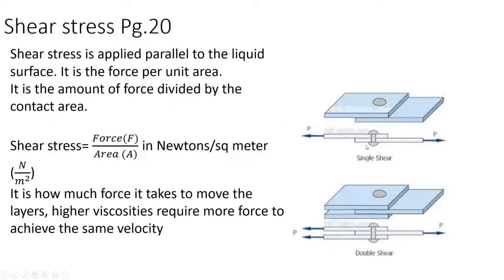Shear stress is the force applied parallel to a liquid — force per unit area (Newtons per square metre) — and is a measure of how much force it takes to move the layers. Higher viscosities require more force to achieve the same velocity: imagine washing your hands in water versus washing them in molasses. Newton's calculations are based on absolute or dynamic viscosity. There are two types of viscosity we'll discuss: absolute (also called dynamic) and kinematic.